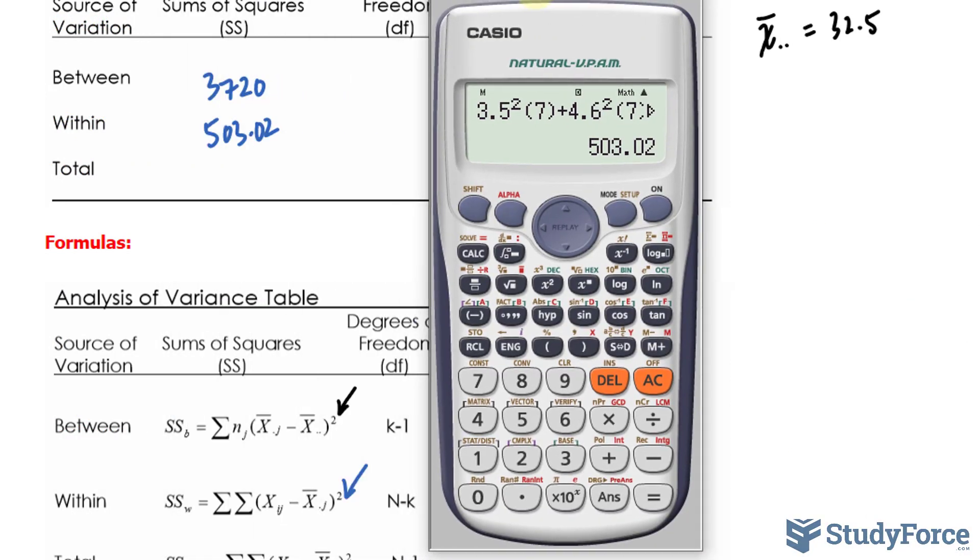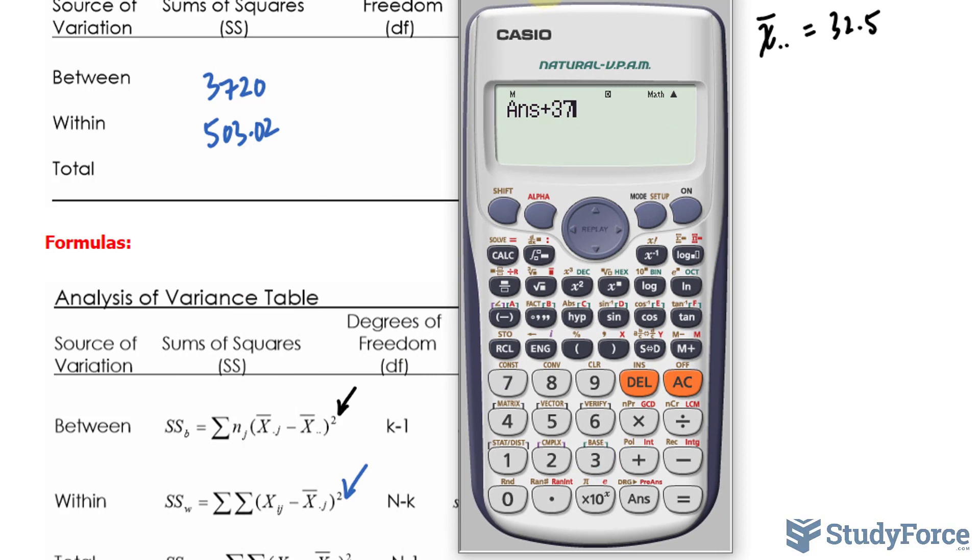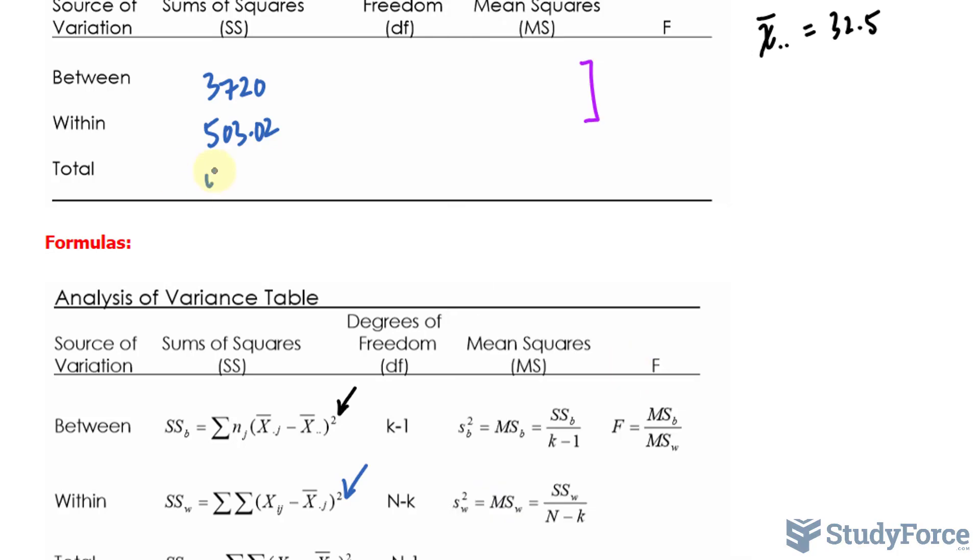Adding these two values up, so the number on our screen plus 3720, we get 4223.02.